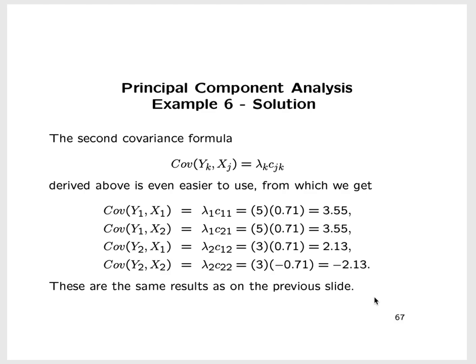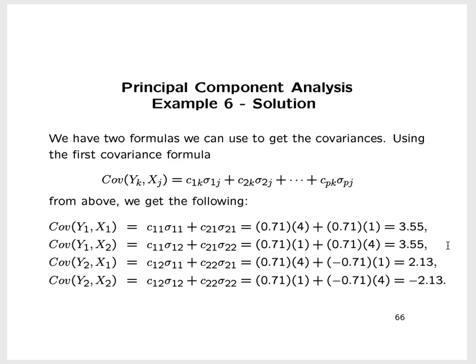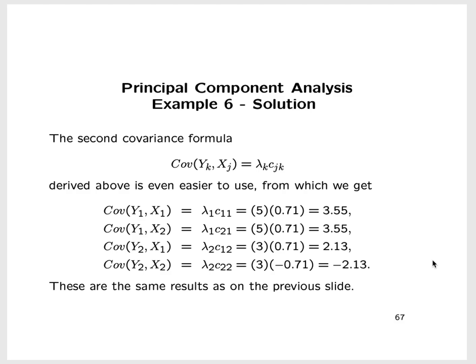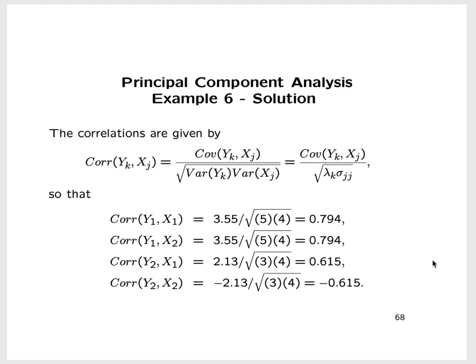Both formulas give the same values. Once we have the covariances, we can calculate the correlations by dividing by the square root of the product of the appropriate variances. The correlation between y1 and x1 is 0.794; the correlation between y1 and x2 is also 0.794. The correlation between y2 and x1 is 0.615, and the correlation between y2 and x2 is -0.615.